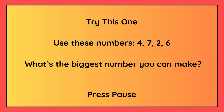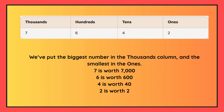Try this one. Use these numbers 4, 7, 2 and 6. What's the biggest number you can make? The answer is seven thousand six hundred and forty-two. You should have put the biggest number, which is seven, in the thousands column, the second biggest number, which is six, in the hundreds column, four in the tens column and two, which is the smallest number, in the ones column.